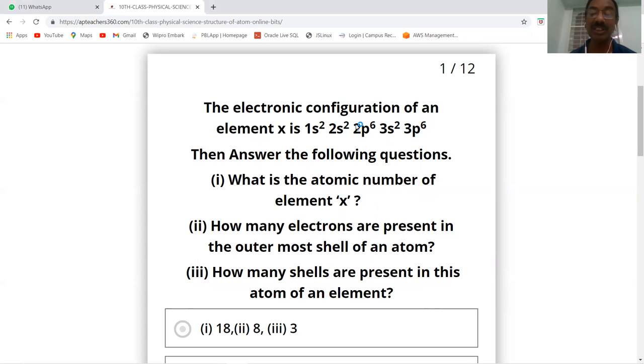How many electrons are present in the outermost shell of an atom? Looking at the outermost shell, 3s2 and 3p6, that's 2 plus 6 equals 8 electrons.